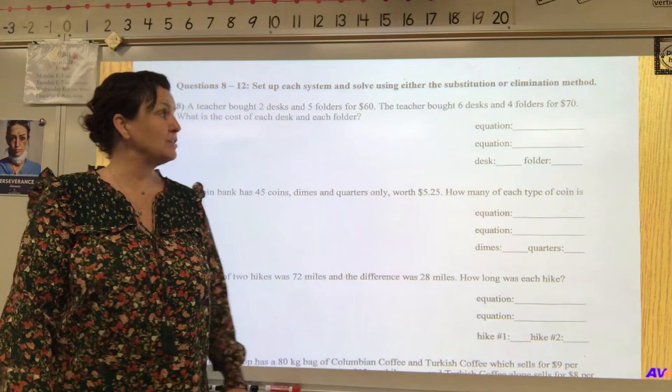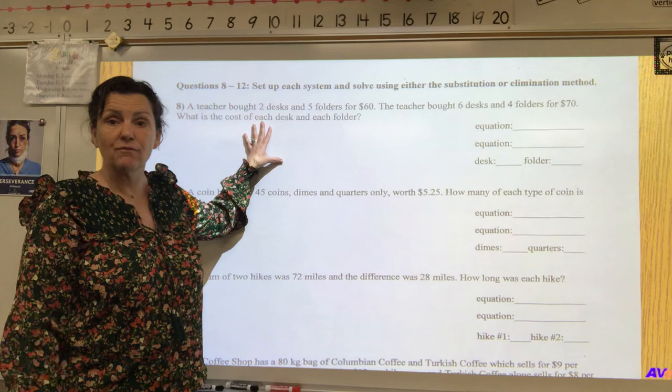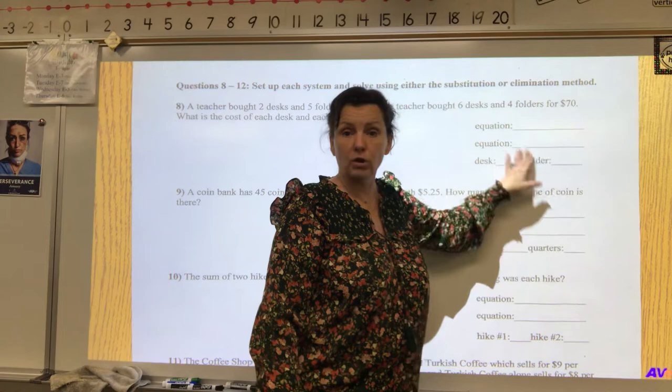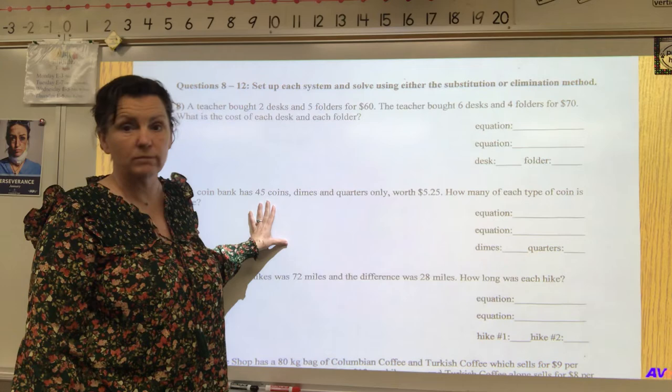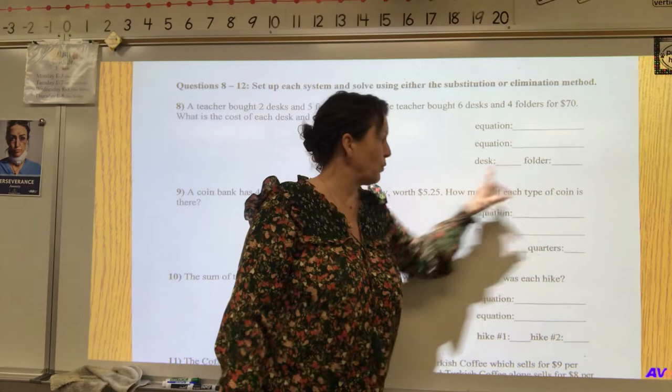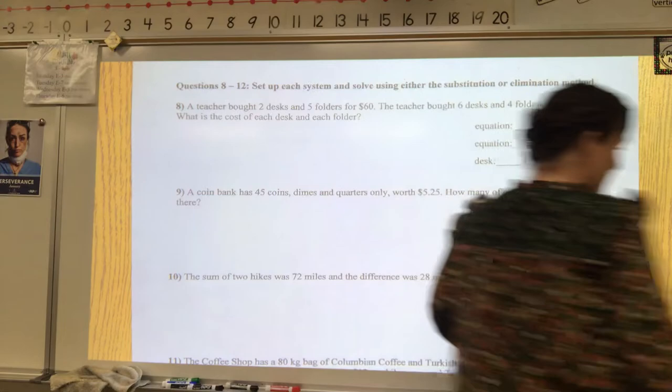We have a teacher question, a purchasing question. You'll definitely have one of those on the test—10 points, 2.5 points for each of the four parts. Next, you're going to have a coin question, definitely a coin question. It'll most likely be dimes and quarters on your test as well. Again, it's a 10-point question, 2.5 for each of the pieces you can give me correctly.